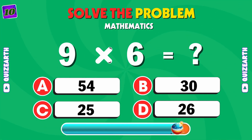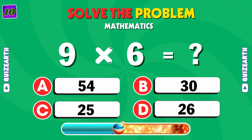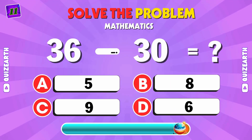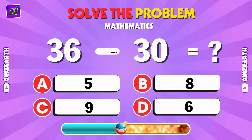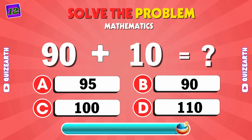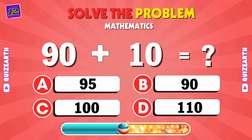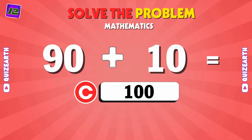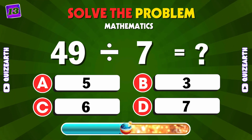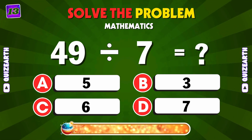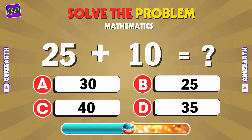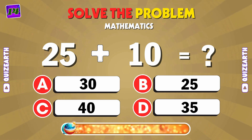What is 9 times 6? A: 54. Here's a simple one — 36 minus 30 equals what? D: 6. What's 90 plus 10? C: 100. Can you divide 49 by 7? Let's see if you get it right. D: 7. Let's add 25 and 10. What do you get? D: 35.